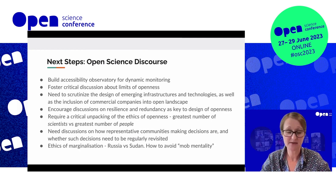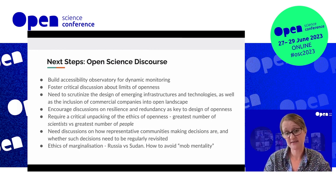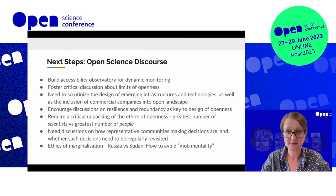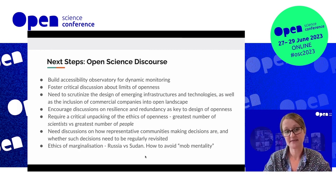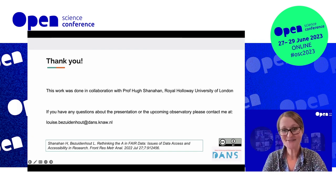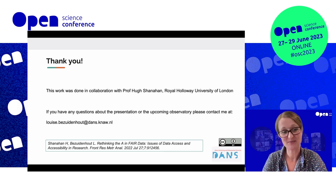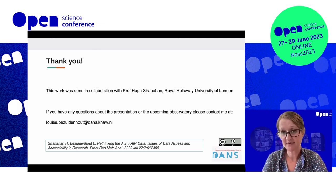And this requires us to really think about unpacking the ethics of openness. Are we talking about the greatest number of scientists, which would obviously sit in high-income countries? Are we talking about the greatest number of people who should have access to open science resources? And then we need to think about issues to do with the ethics of marginalization — how can we as open science communities stick by our political convictions without leaning into a mob mentality that causes massive disruptions in the open science landscape? I'd like to thank you for your attention. I'd also like to thank my collaborator Hugh Shanahan from the Royal Holloway University of London for his work on this project. If you have any questions about the presentation or the upcoming observatory, please do feel free to contact me — my email is on the screen. And please do feel free to access the paper that Hugh and I wrote about this study to get a bit more detail. Thank you.